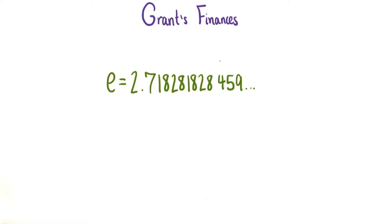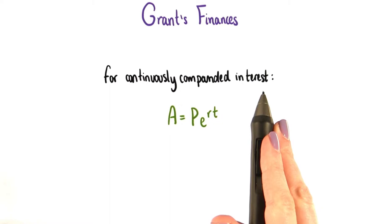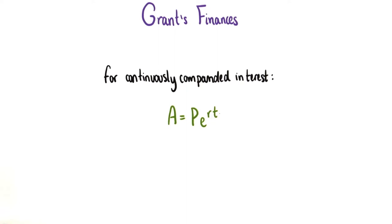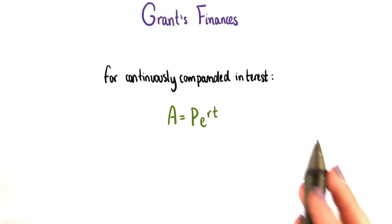And in fact, the formula for calculating continuously compounded interest does involve e. Here it is. For continuously compounded interest, we have this formula: A equals P times e to the rt. A stands for the total amount of money in the account after t years have passed. P is the principal amount invested in the account. And r is the annual interest rate. Remember, e is not a variable — it's that very special number we just discussed.